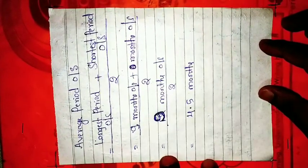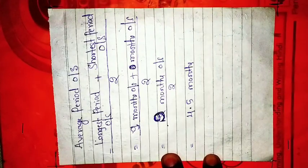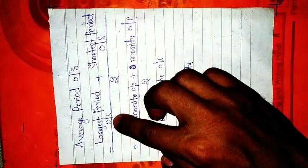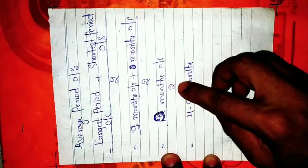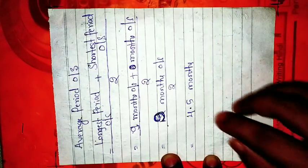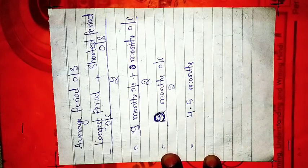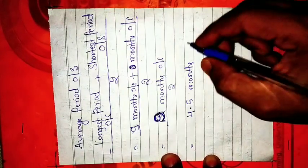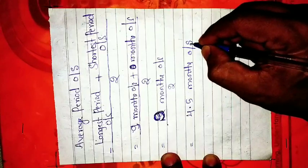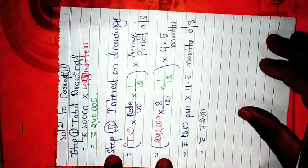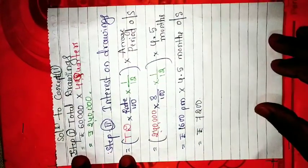To calculate the average period outstanding, the formula is: longest period outstanding plus shortest period outstanding, divided by 2. That is 9 months plus 0 months divided by 2, equals 9 months divided by 2, equals 4.5 months. So on average, the drawings were outstanding for 4.5 months. Now let us look at the exam-oriented solution.